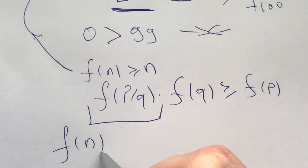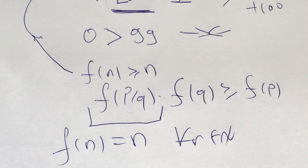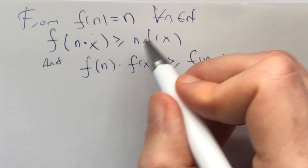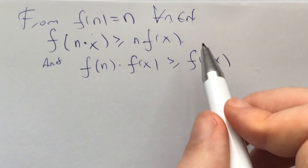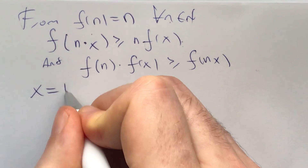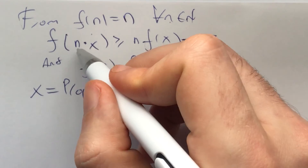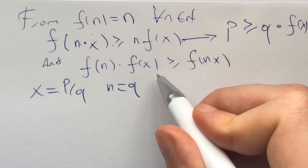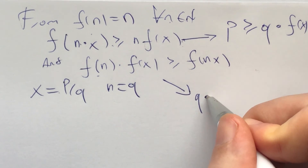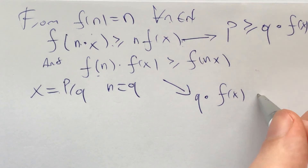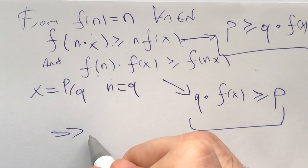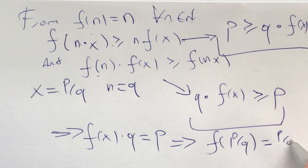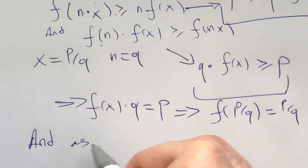From f(n) = n and f(nx) ≥ n·f(x) by repeatedly applying inequality two, and f(n)·f(x) ≥ f(nx) by inequality one, set x = p/q and n = q. Then f(q · p/q) = f(p) = p ≥ q·f(p/q), giving p/q ≥ f(p/q). Combined with f(p/q) ≥ p/q shown earlier, we get f(p/q) = p/q. This proves that f(x) = x for all positive rational numbers. Thanks for problem solving.